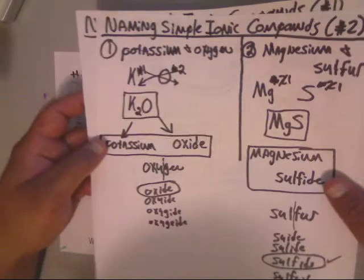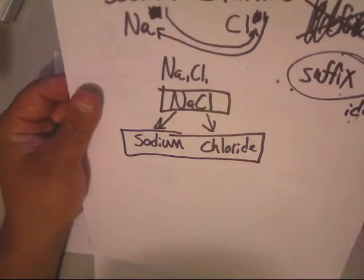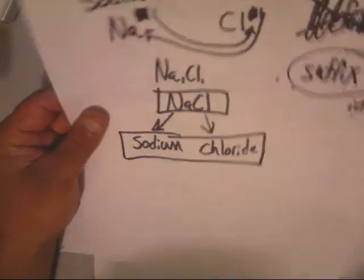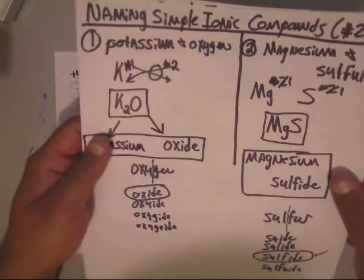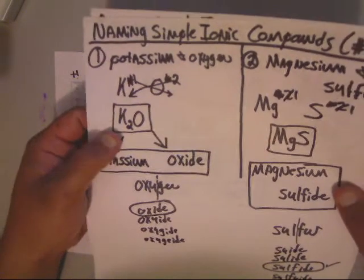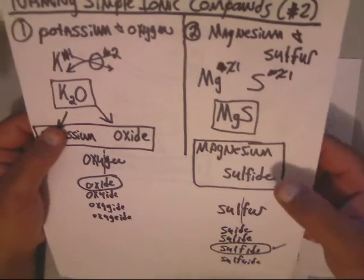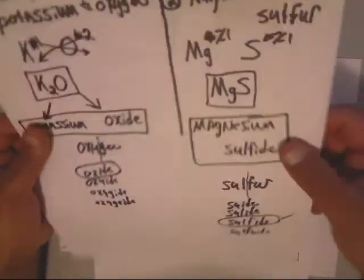In the first two videos, we went over how to name chlorine, how to write the formula, and naming it. We explained no prefixes are used, so the suffix -IDE is acceptable. We also went over how to name potassium oxide and how to write its formula, and how to name magnesium sulfide and how to write its formula. Check out those two videos if you want to see those.